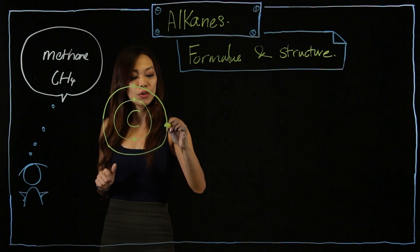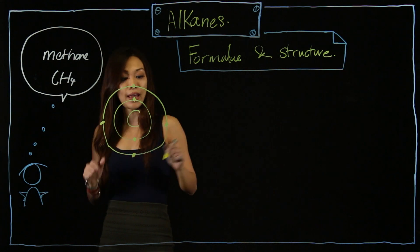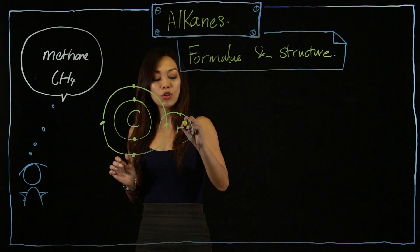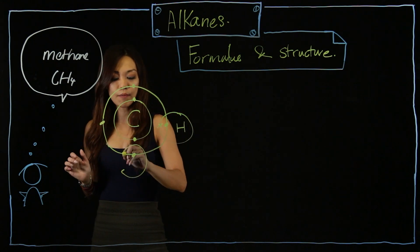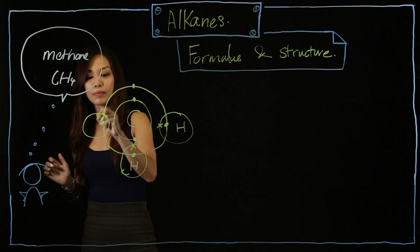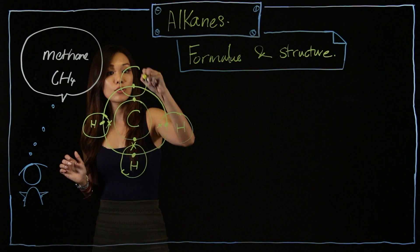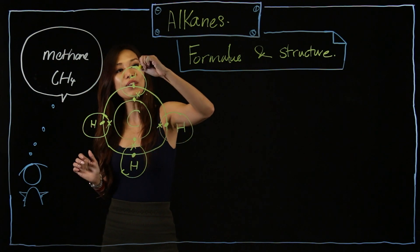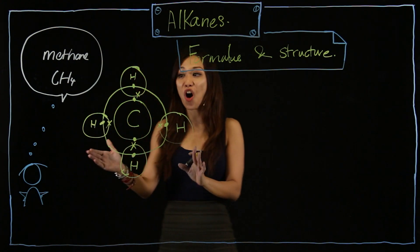Carbon has four electrons in the outer shell — one, two, three, and four. They share with hydrogen. So, H dot and cross — this will be a cross. I'm drawing the dot and cross of methane, with H, H, H, and H. Now, this is the structure of methane.